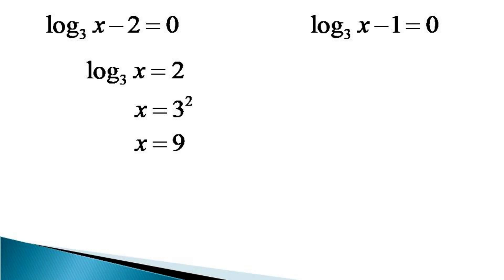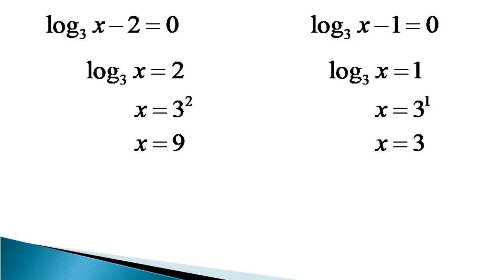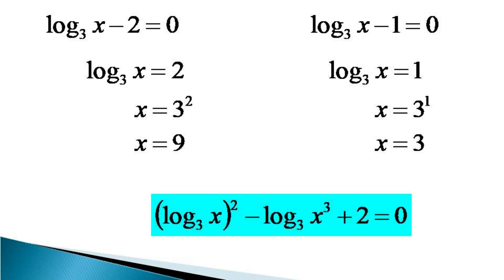Considering the second condition, log of x to the base 3 minus 1 equals 0, so log of x to the base 3 equals 1. From the definition of log, x equals 3 raised to the power 1, so x equals 3. It can be verified from the original equation that both x equals 9 and x equals 3 satisfy the given equation, and hence both are solutions.